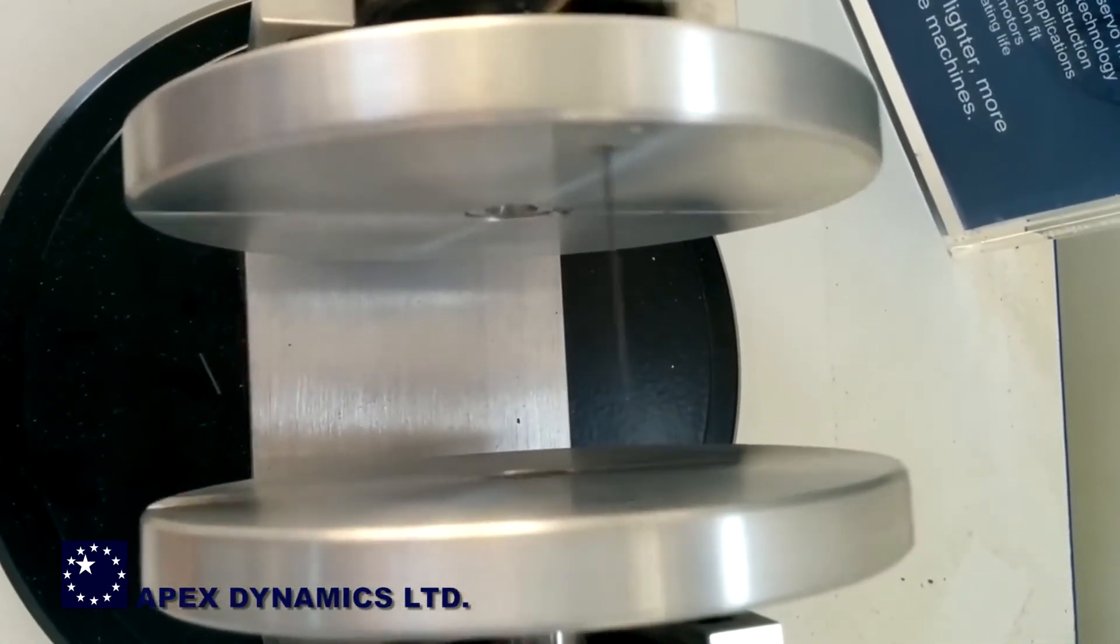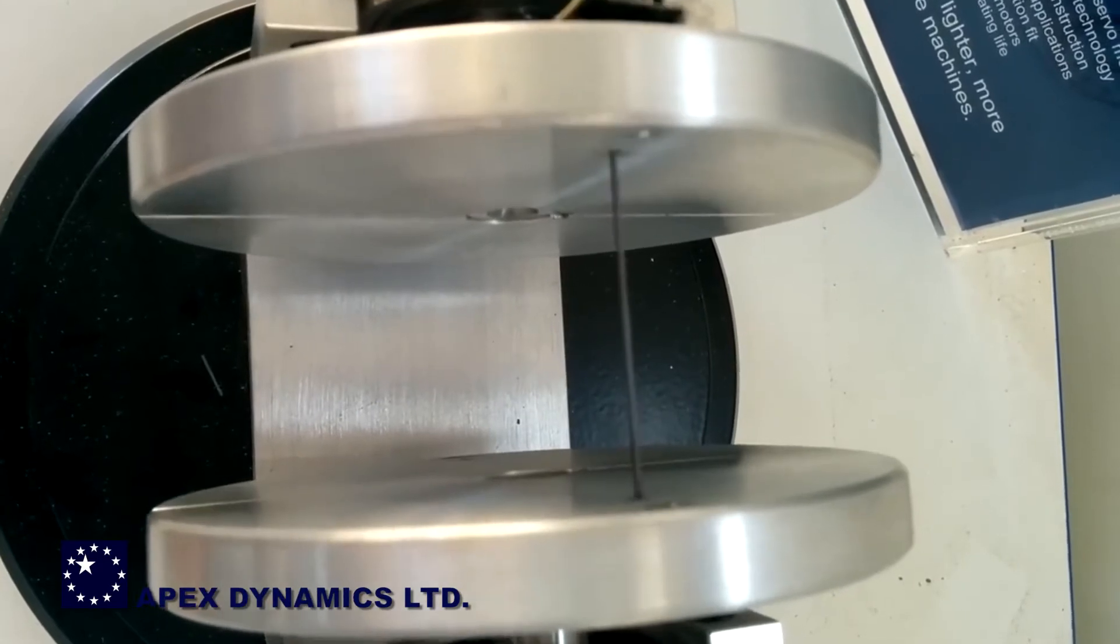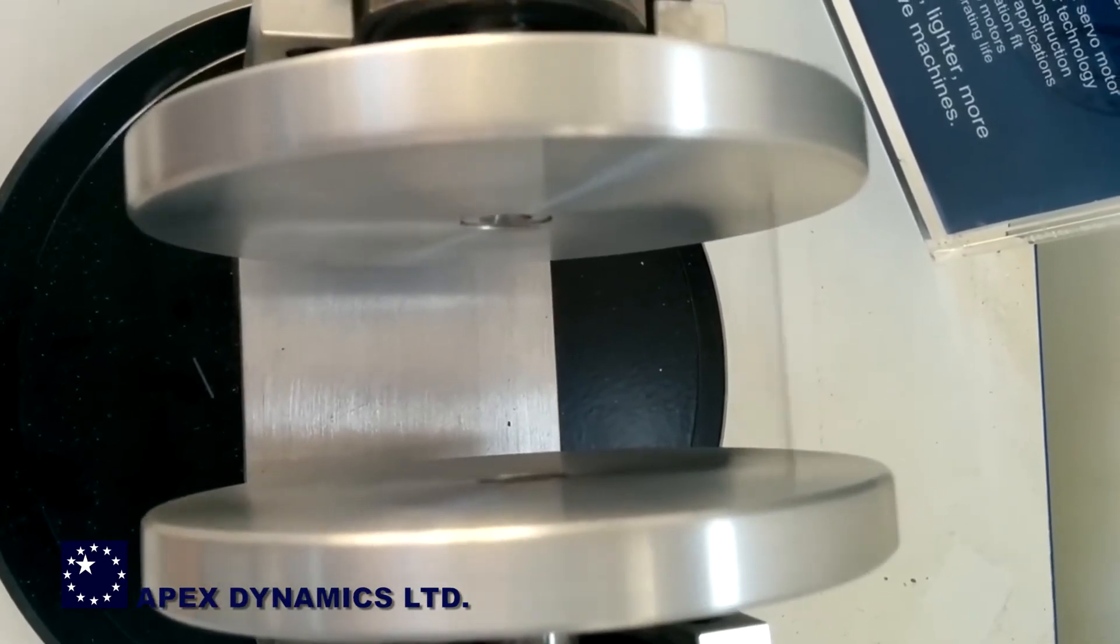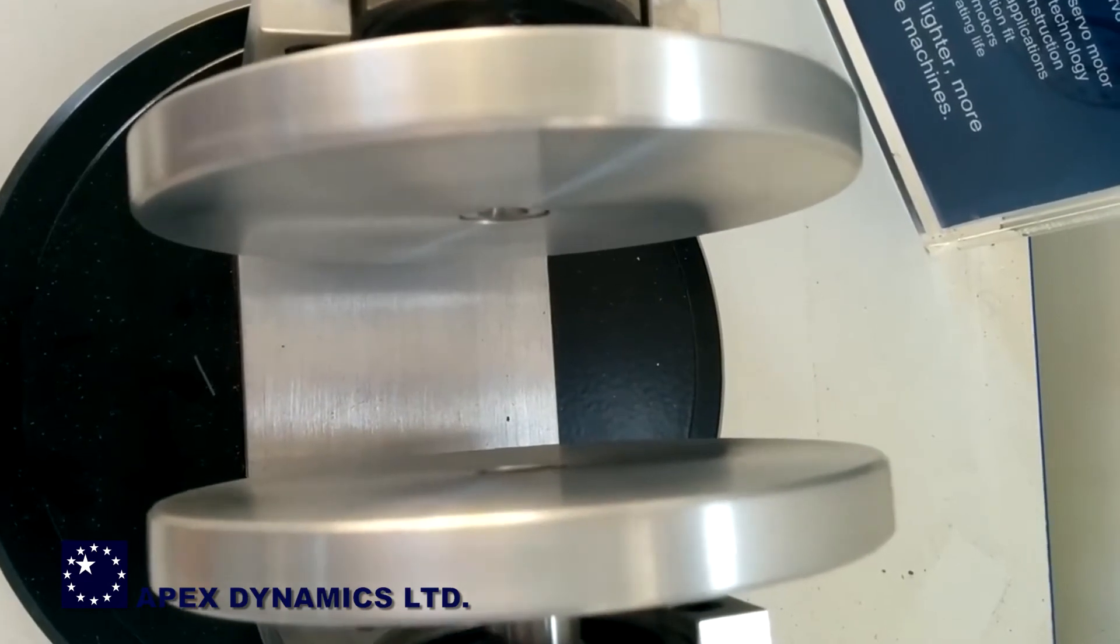The fragile pencil lead remains unbroken throughout. We have planetary gearboxes with backlash performance better than one arc minute.